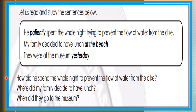Let us read and study the sentences below. He patiently spent the whole night trying to prevent the flow of water from the dike. My family decided to have lunch at the beach. They were at the museum yesterday. The highlighted words are: patiently, at the beach, and yesterday.